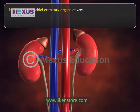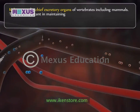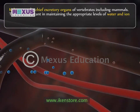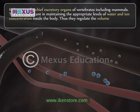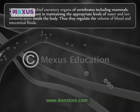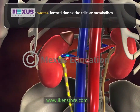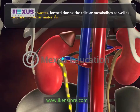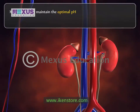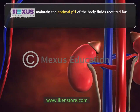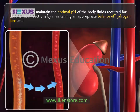In case of multicellular organisms, since all the cells are not in direct contact with the outside medium, they cannot release waste products through the body surface, and thus they have developed an excretory system. Kidneys are the chief excretory organs of vertebrates including mammals. They are important in maintaining appropriate levels of water and ion concentration inside the body, regulating the volume of blood and interstitial fluids. Kidneys also help maintain the optimal pH of body fluids by balancing hydrogen ions and hydroxyl ions.